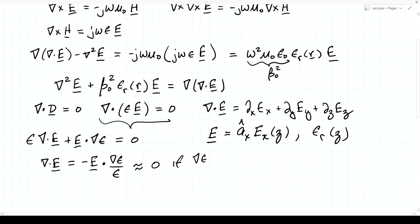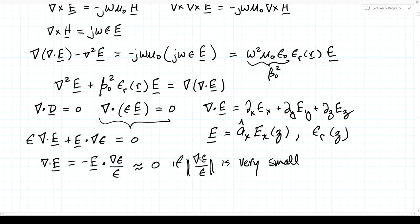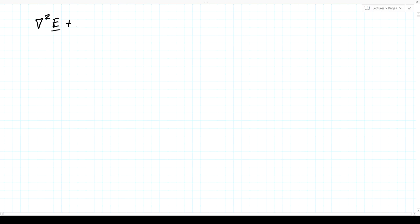An important special case—the one we will look at—is where the electric field is polarized in the x direction and only depends on the z coordinate, coupled with epsilon relative being a function of z alone. In that special case it is rigorously true that the divergence of E equals zero. More complicated problems are well approximated if the dielectric constant varies quite slowly with position.